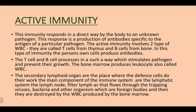Active immunity responds in a direct way by the body to an unknown pathogen. This response is the production of antibodies specific to the antigen of a particular pathogen. Active immunity involves two types of white blood cells: T cells from the thymus, and B cells from the bone marrow.